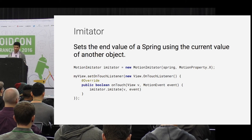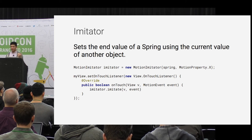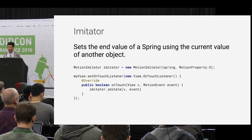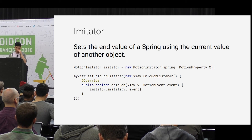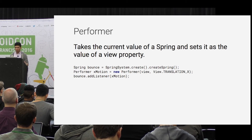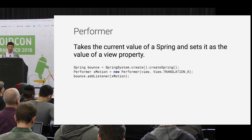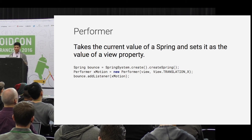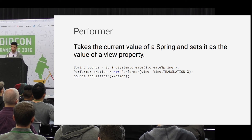Here's a simple example. It takes a motion property X - we've defined the relationship to say I'm going to look at the motion event X value, and I know that correlates to the view property translationX. When you get a touch event, we imitate that and perturb the spring. A performer does that on the other side, taking the motion of the spring and mapping that to translationX. There are only so many view properties, and Google already has a framework for referring to view properties using generics.